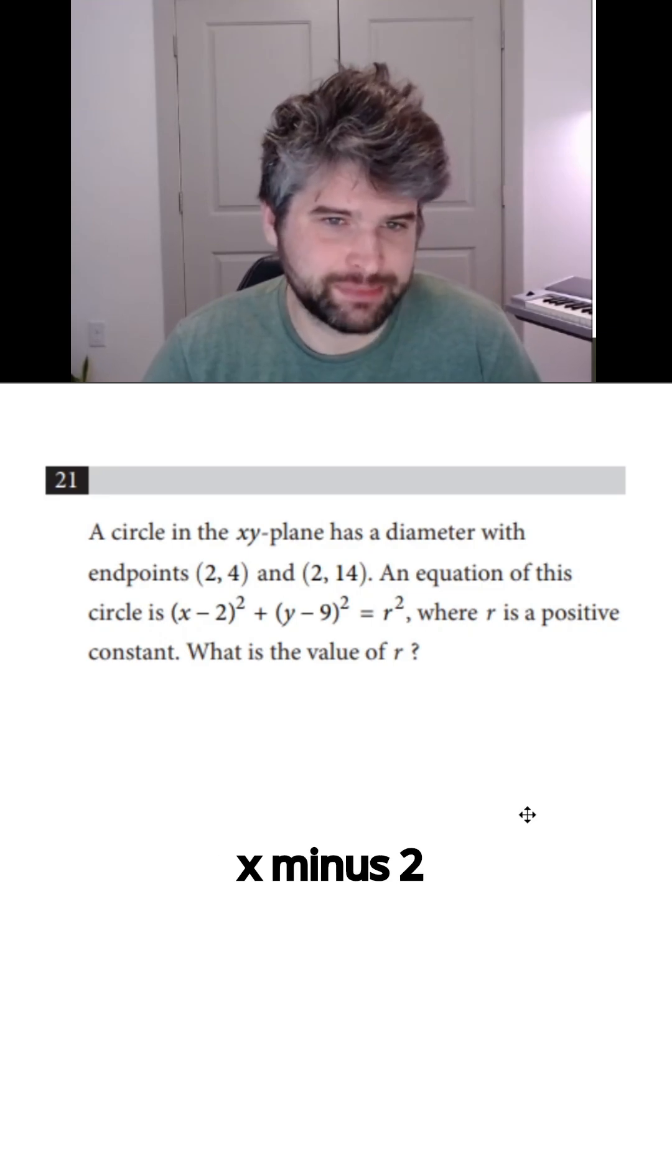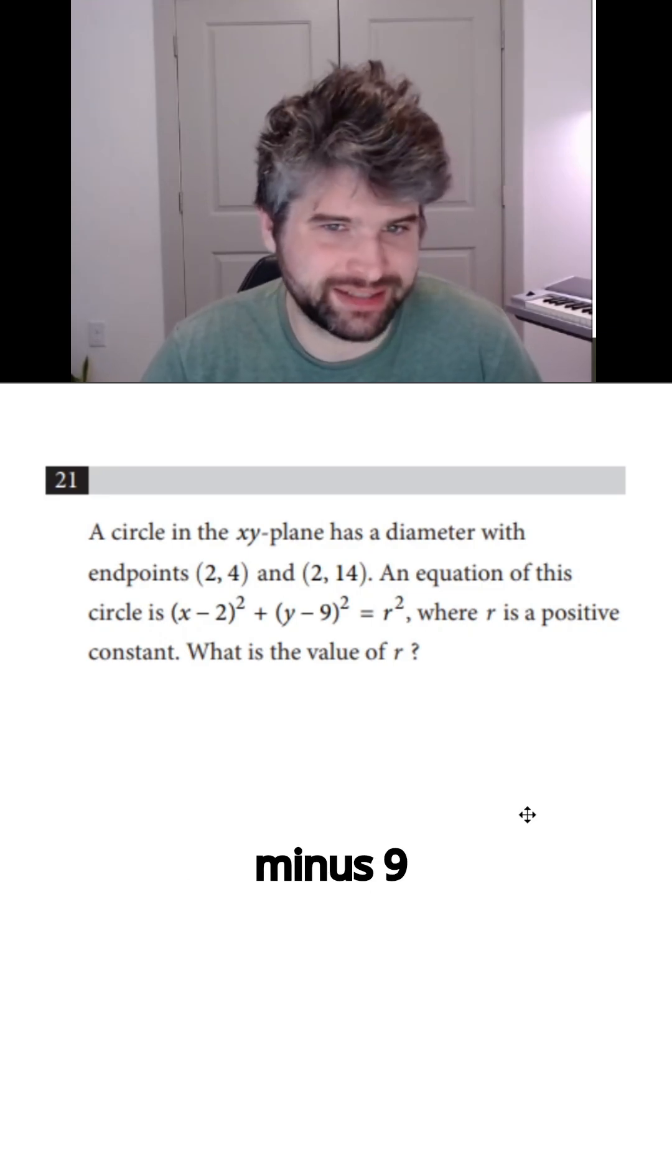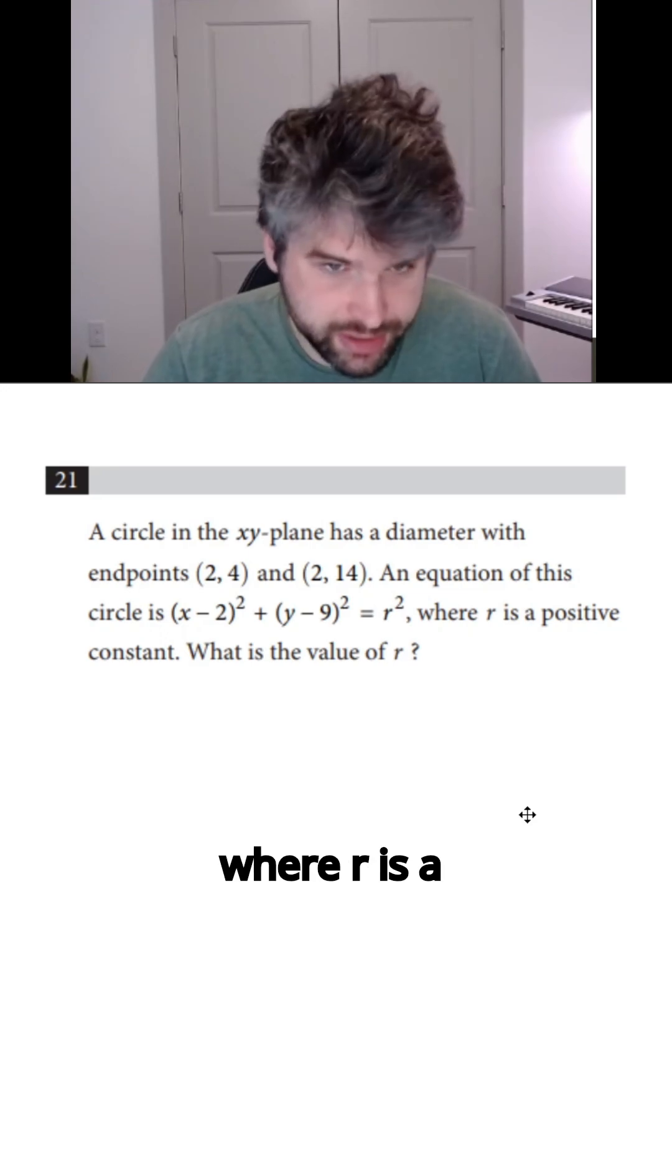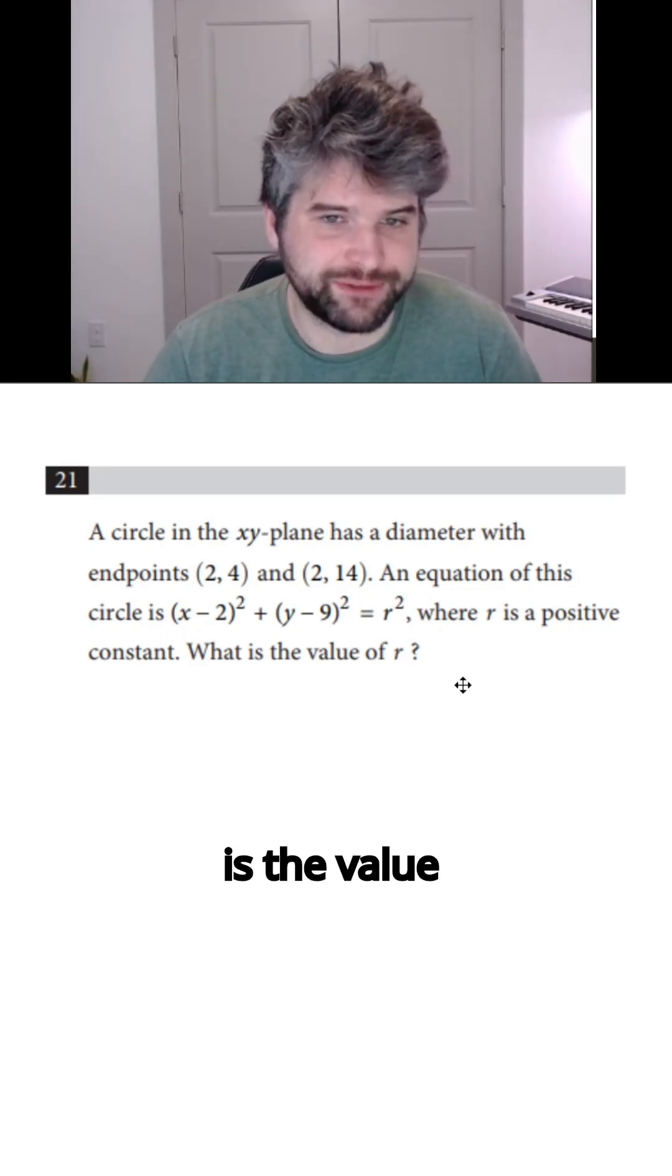An equation of this circle is (x - 2)² + (y - 9)² = r², where r is a positive constant. What is the value of r?